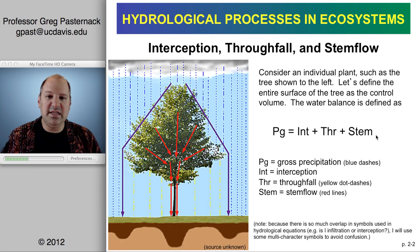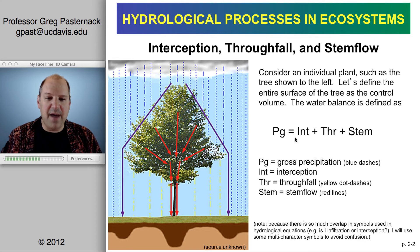You can see the basic accounting discussed in the introductory lecture, with simple symbology for gross precipitation, interception, throughfall, and stemflow.